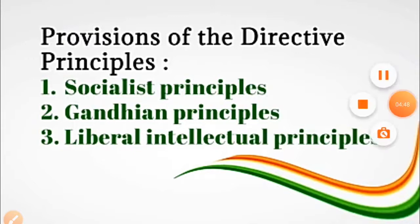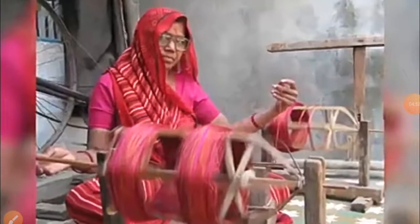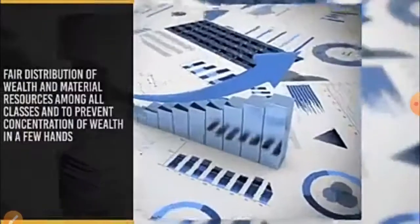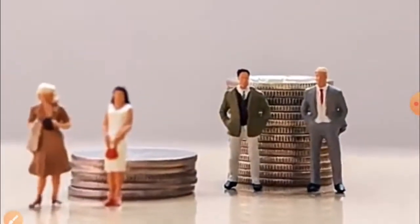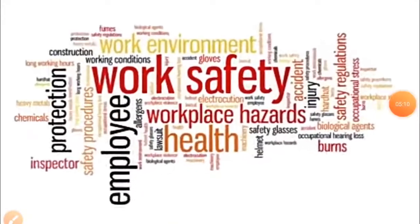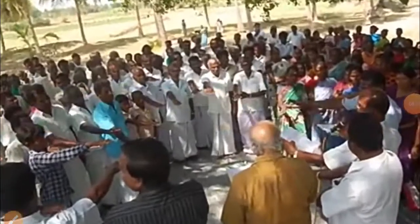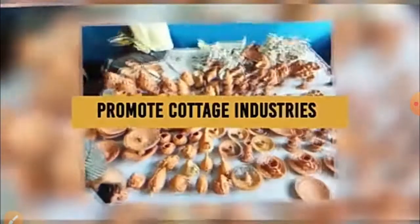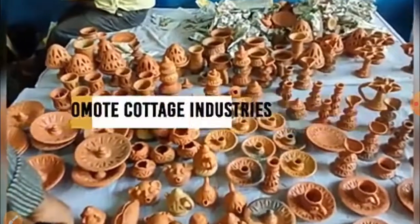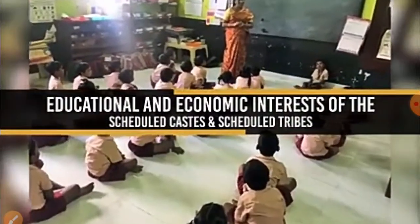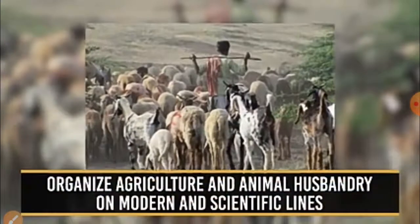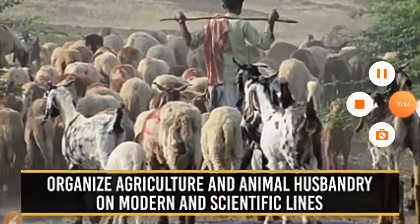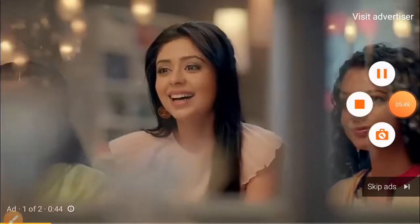Let's see them one by one. Socialist Principles include: equal distribution of wealth and material resources among all classes of people so as to prevent concentration in a few hands; equal pay for equal work for both men and women; and right to work, education and public assistance. Gandhian Principles include: to organize village panchayats; free and compulsory education for all children below 14 years; to encourage cottage industries and promote employment opportunities in rural areas; the state shall promote education and economic interest of the weaker sections and SC and ST peoples; prevent consumption of liquor and other intoxicating drinks; and to improve agriculture and encourage animal husbandry.